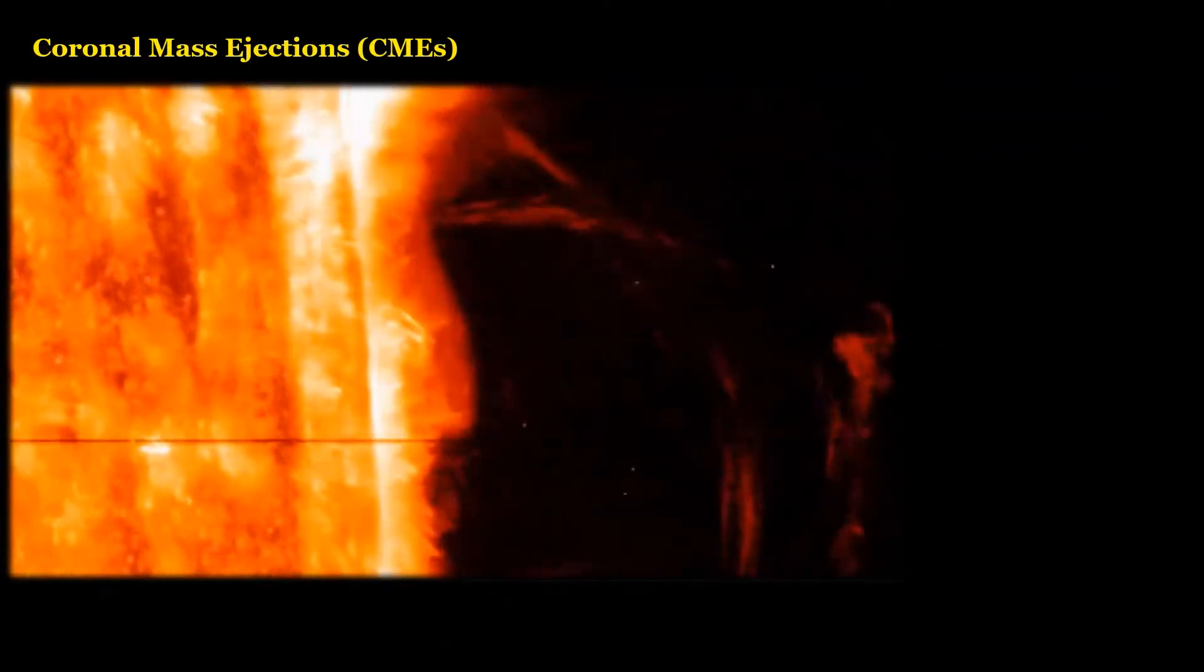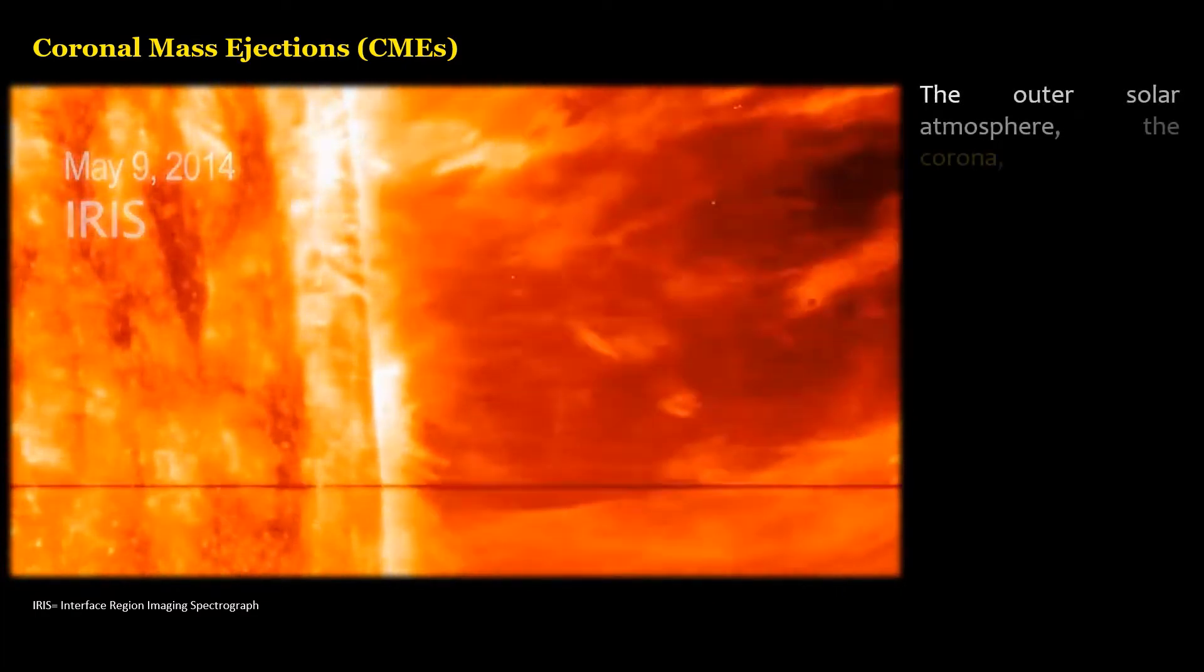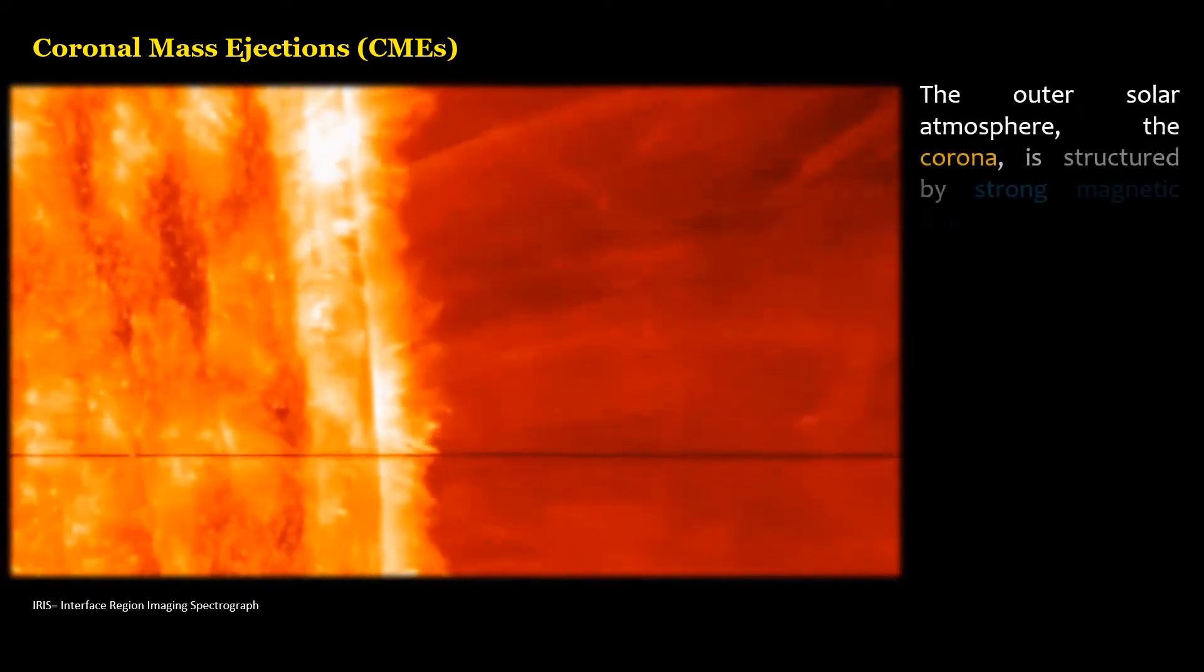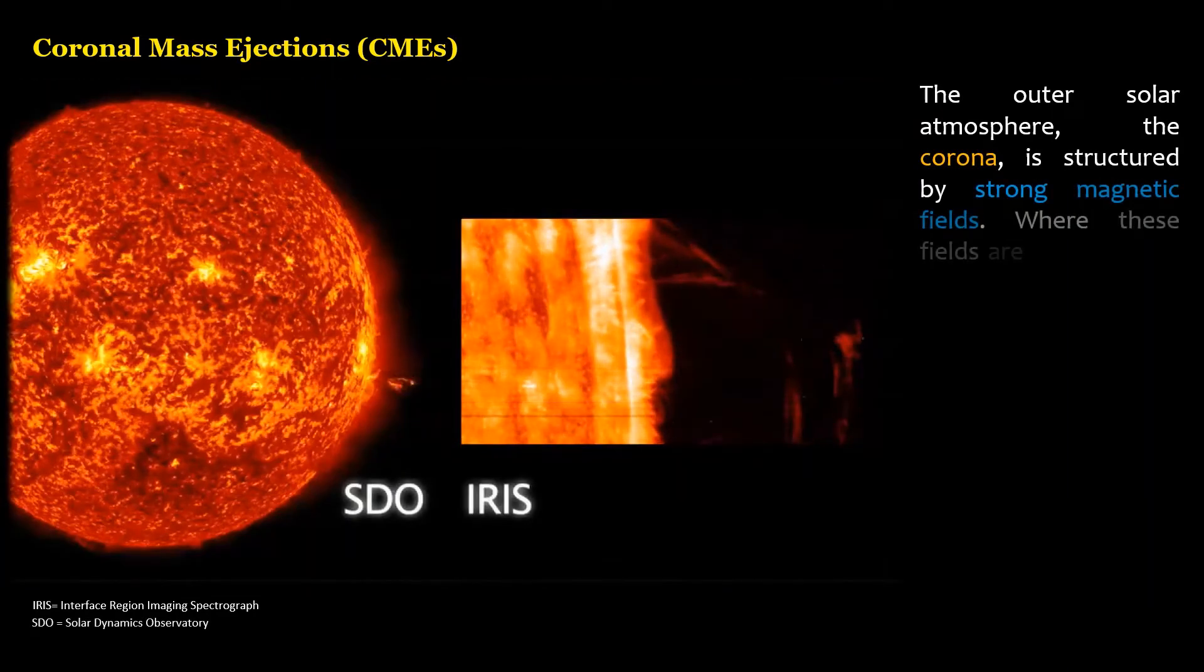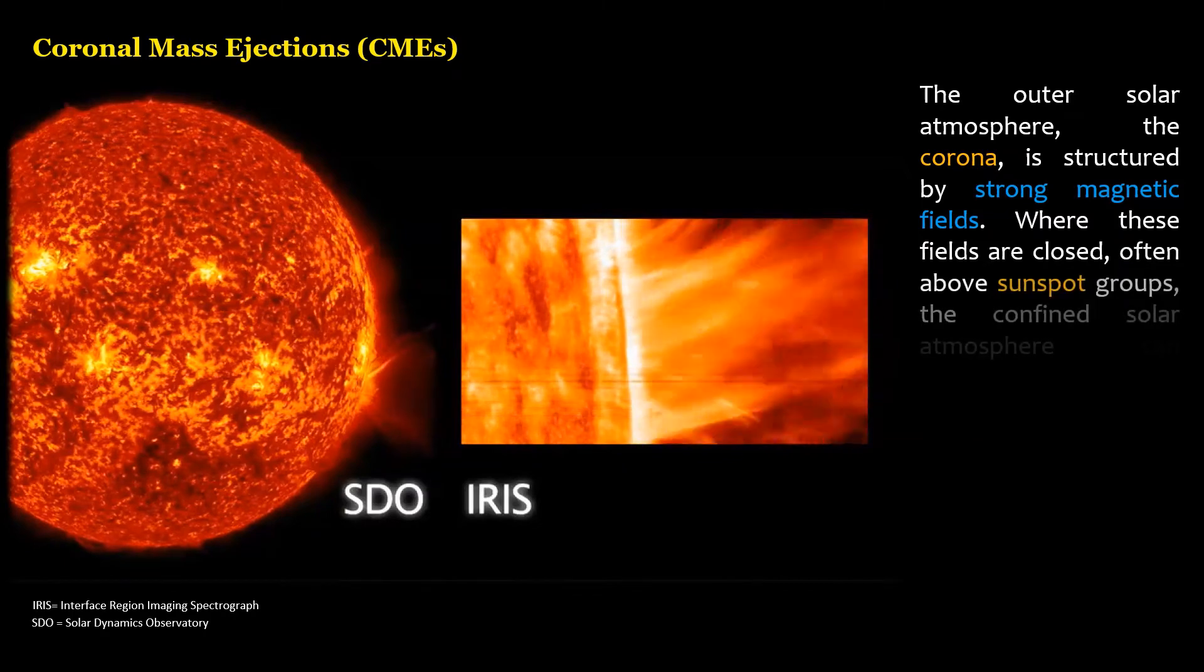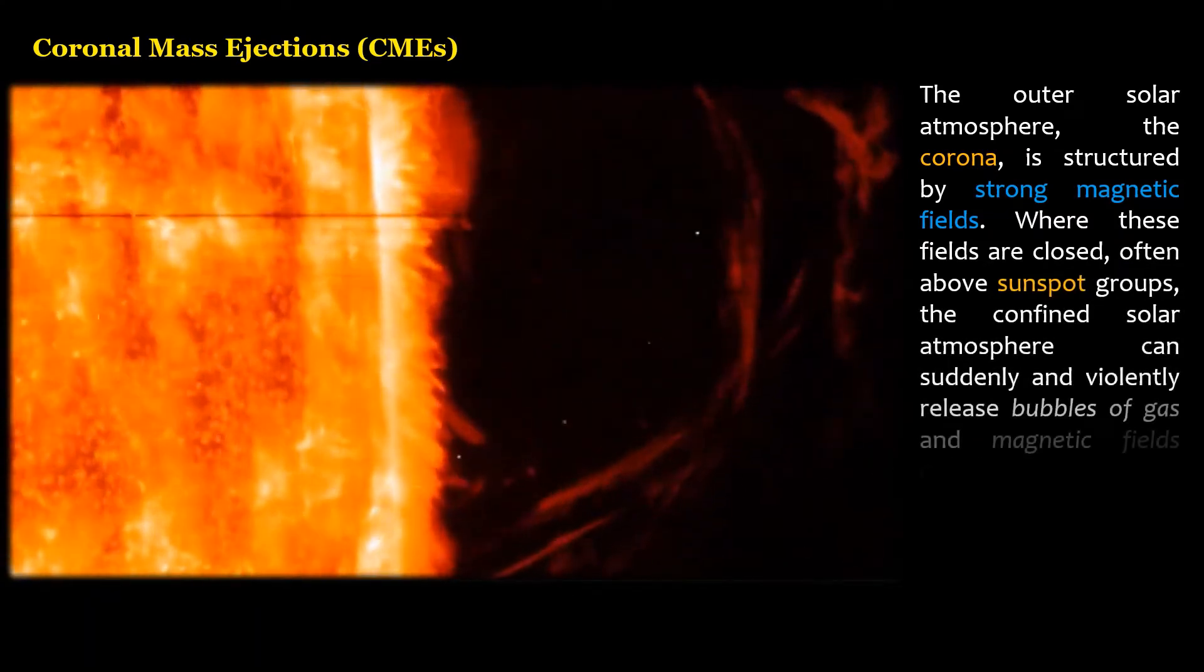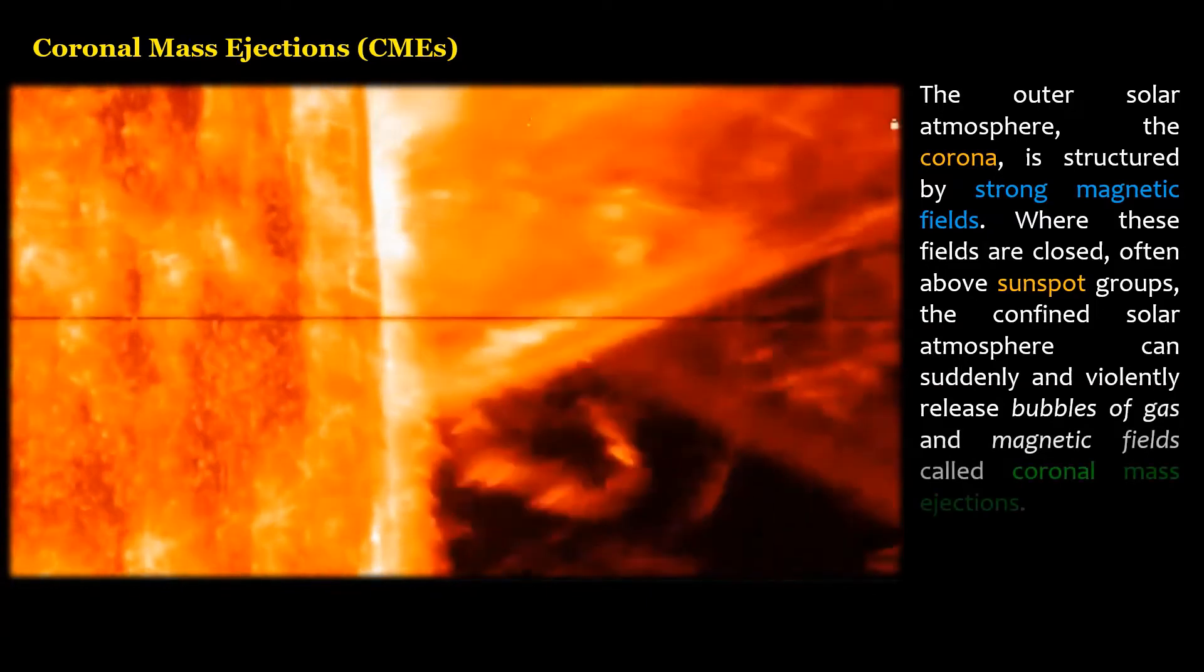The outer solar atmosphere, the corona, is structured by strong magnetic fields. Where these fields are closed, often above sunspot groups, the confined solar atmosphere can suddenly and violently release bubbles of gas and magnetic fields called coronal mass ejections.